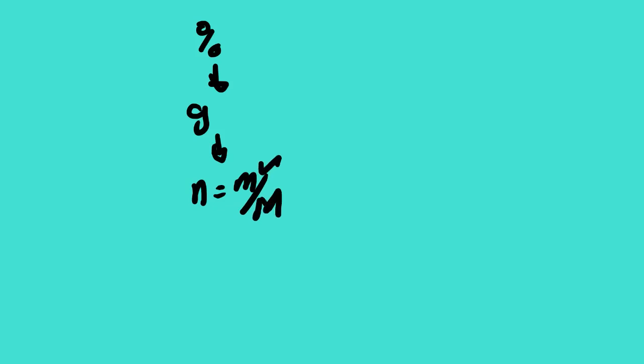Now we know that the first step when calculating empirical formula — if you are given the mass composition in percent — we are going to convert to grams. How do you convert? We simply change the symbol from percentage to grams. Then from grams we calculate the number of moles using the equation: moles equals mass in grams divided by molar mass.